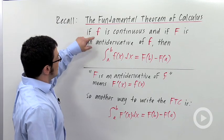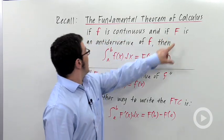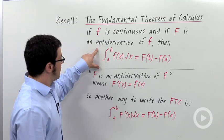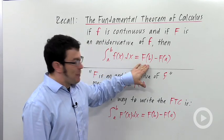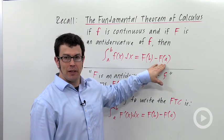It says if little f is a continuous function and if big F is an antiderivative of little f, then the definite integral from a to b of little f of x is capital F of b minus capital F of a.